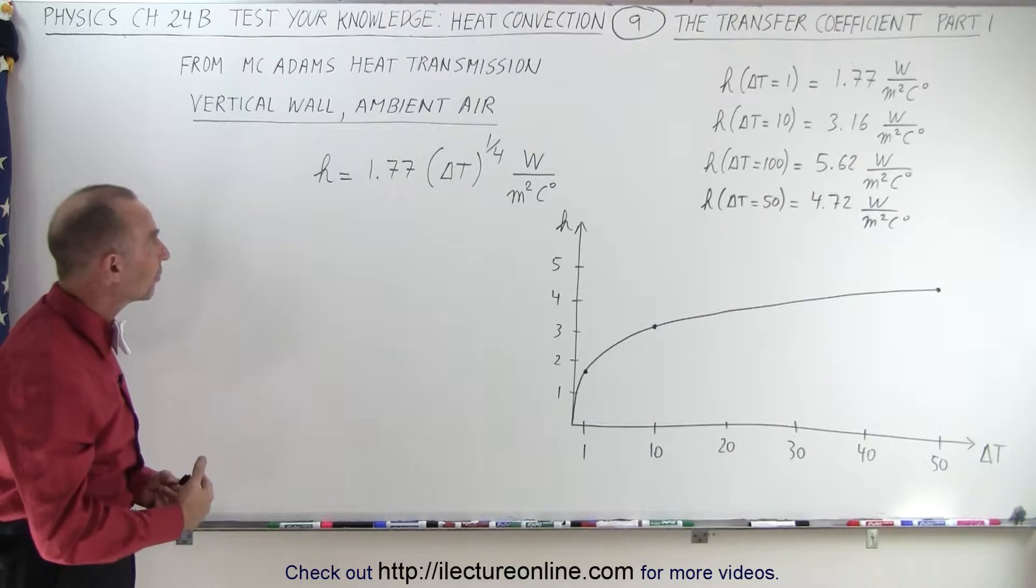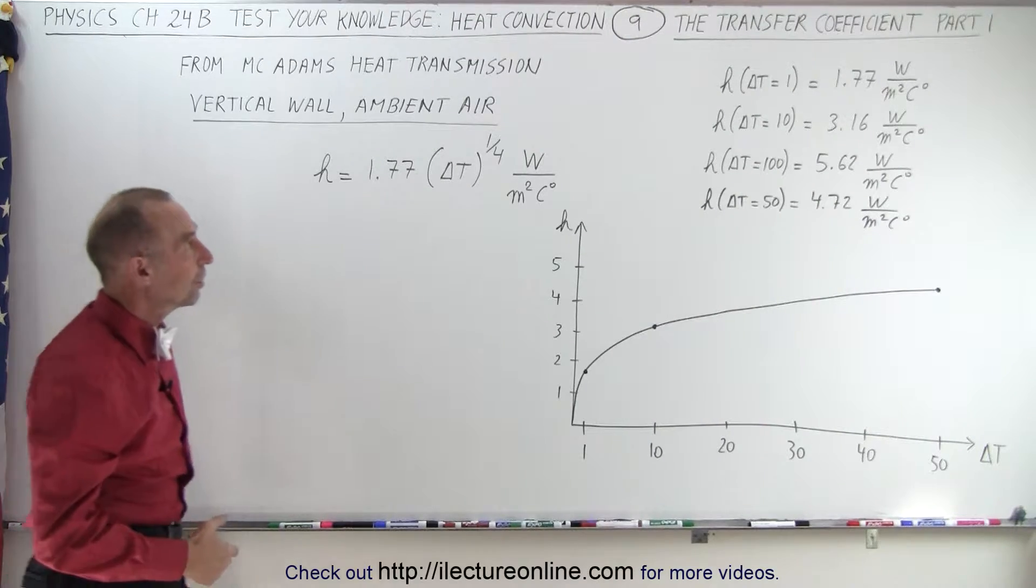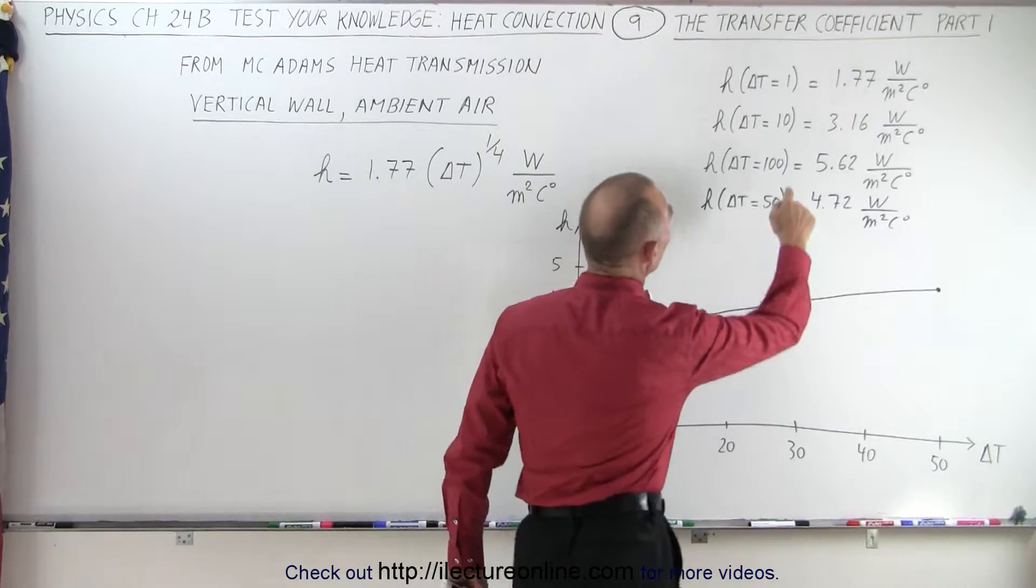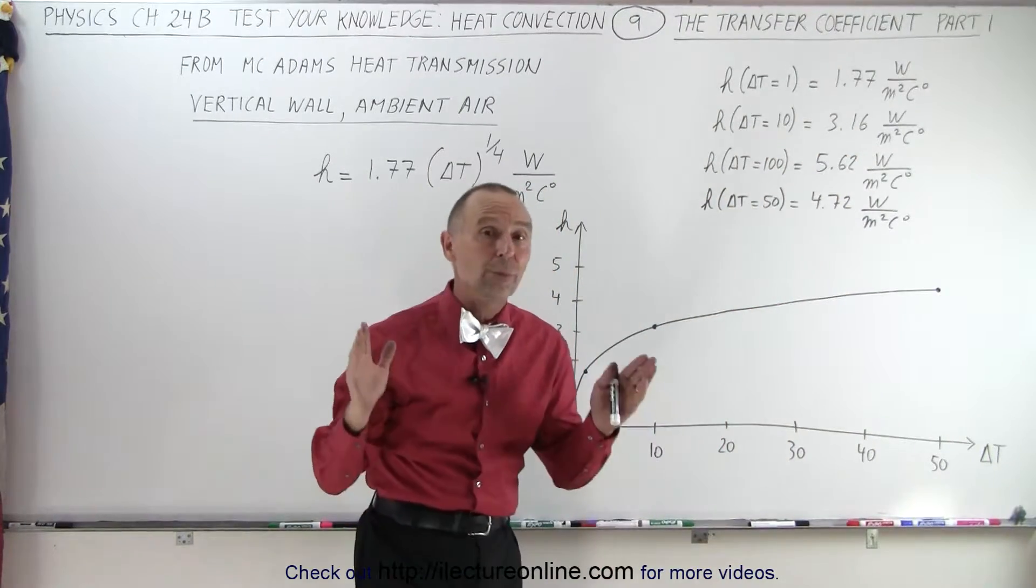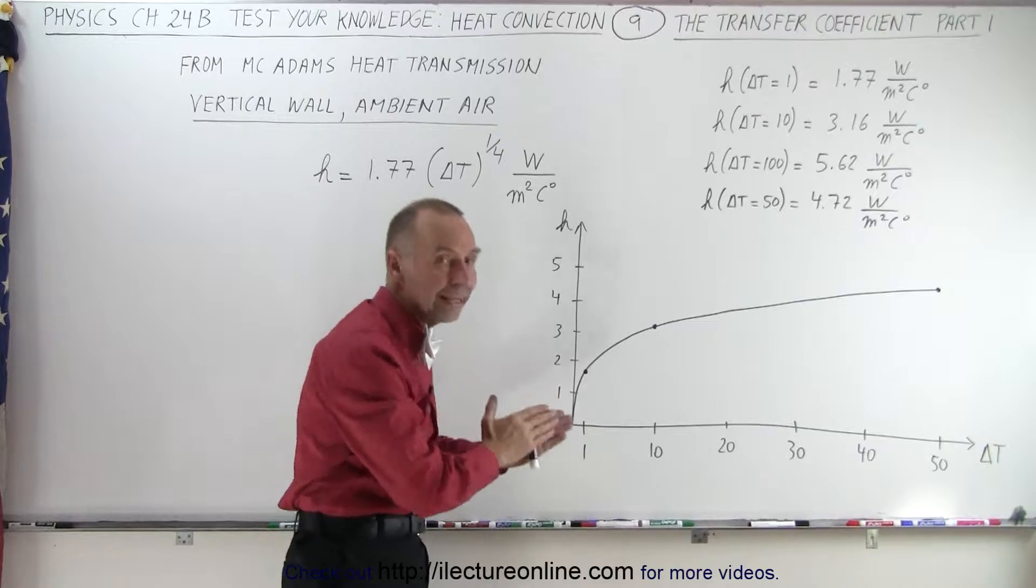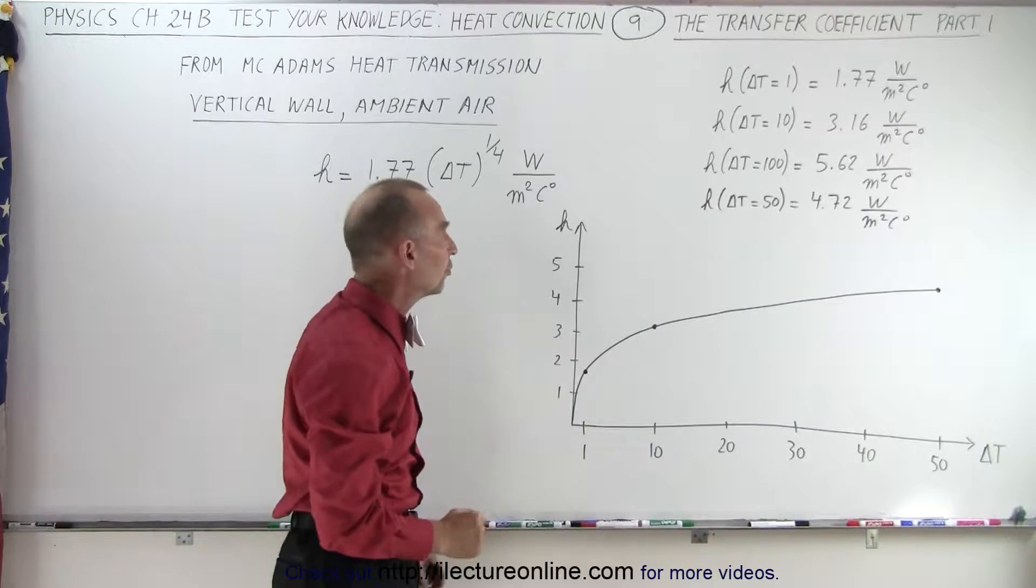Now let's plug in some values and see what that means. When the delta T is just one centigrade degree, of course it would be 1.77. Remember the range that we came up with between 1 and 20, so that falls well within that range.